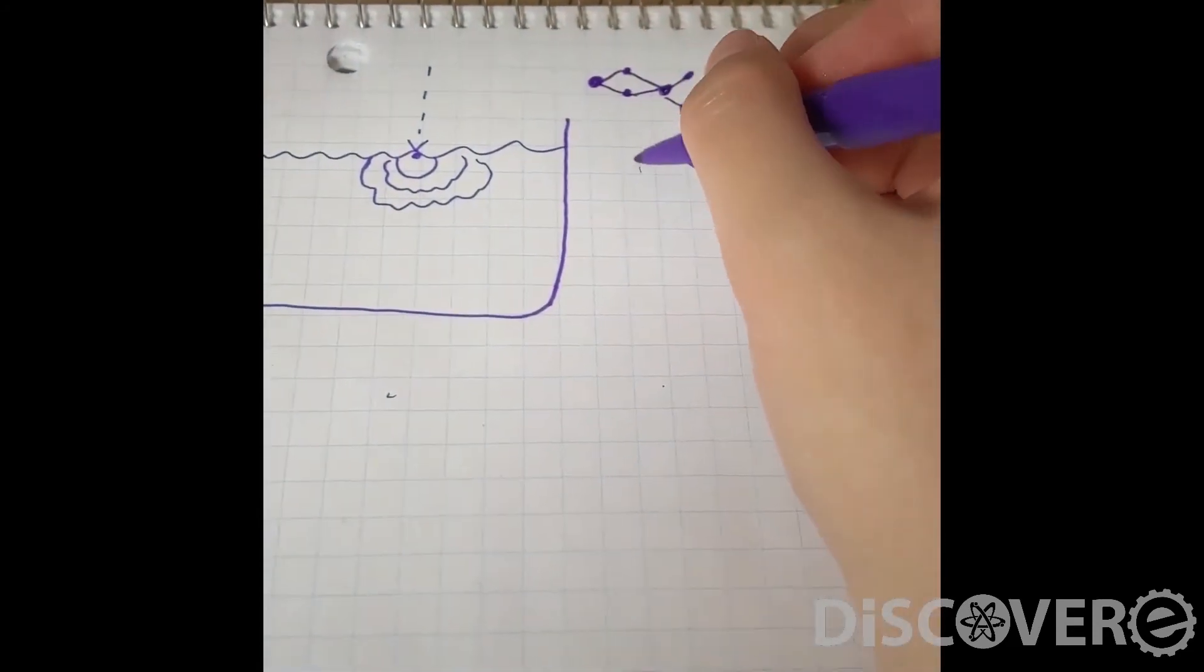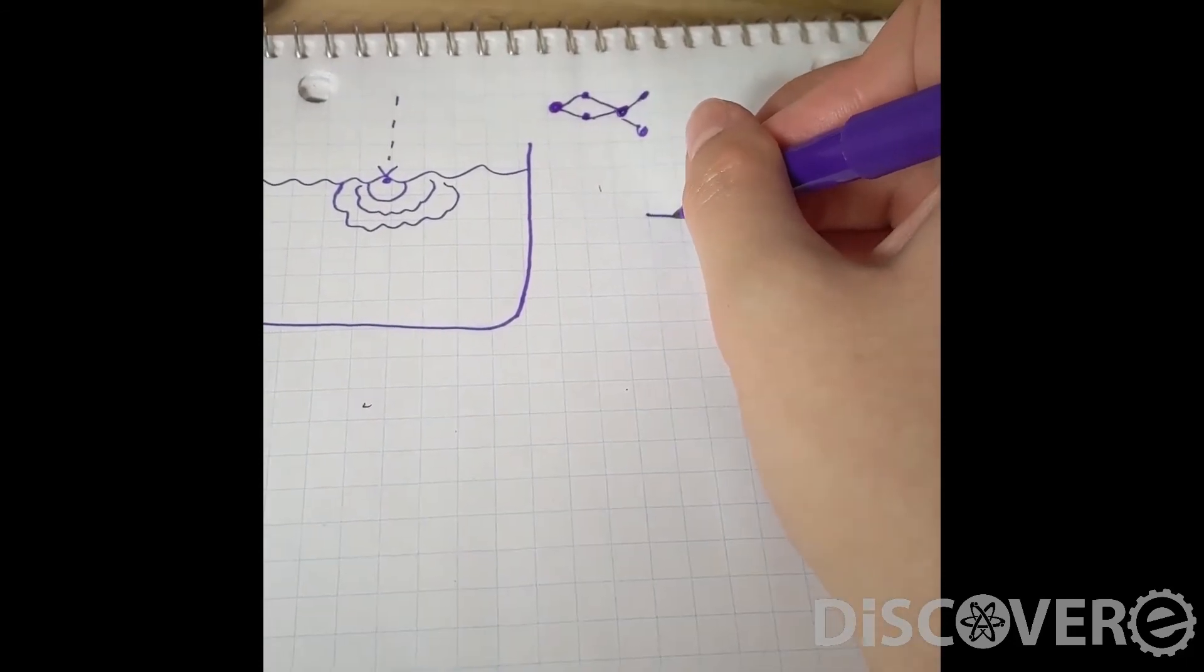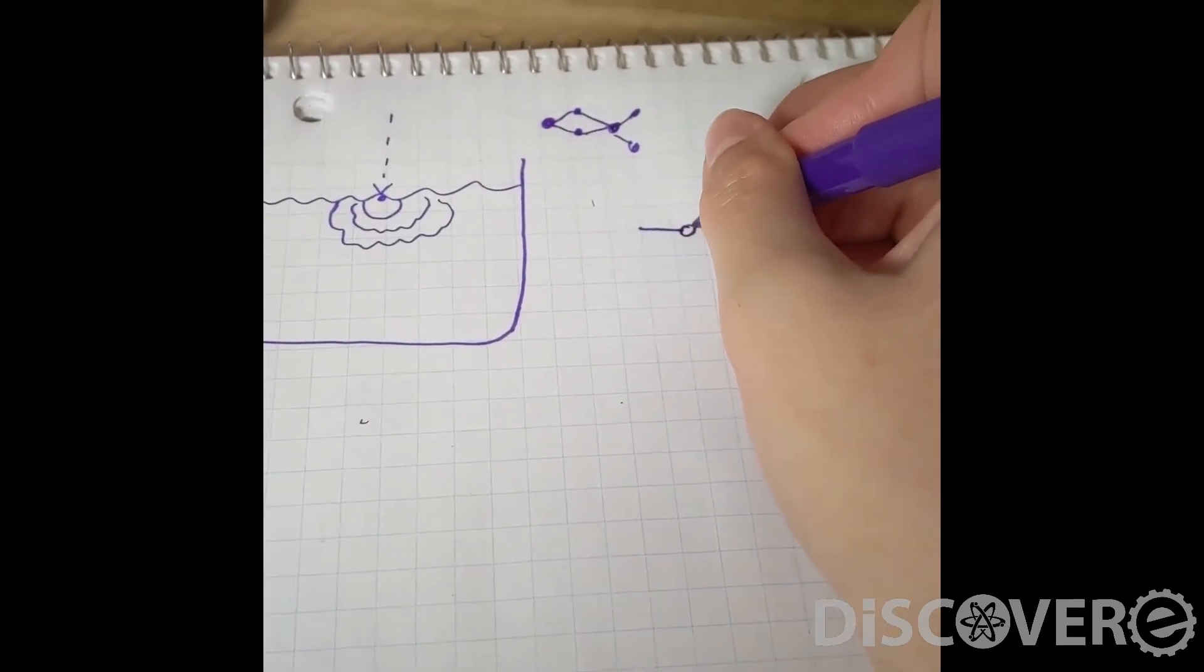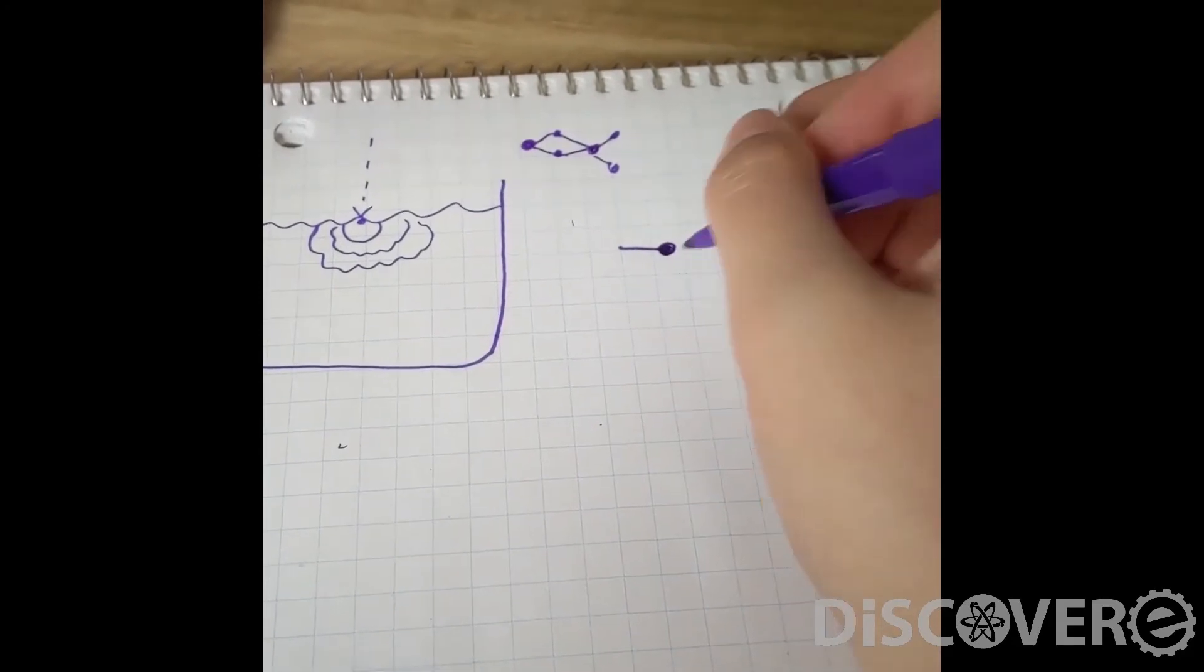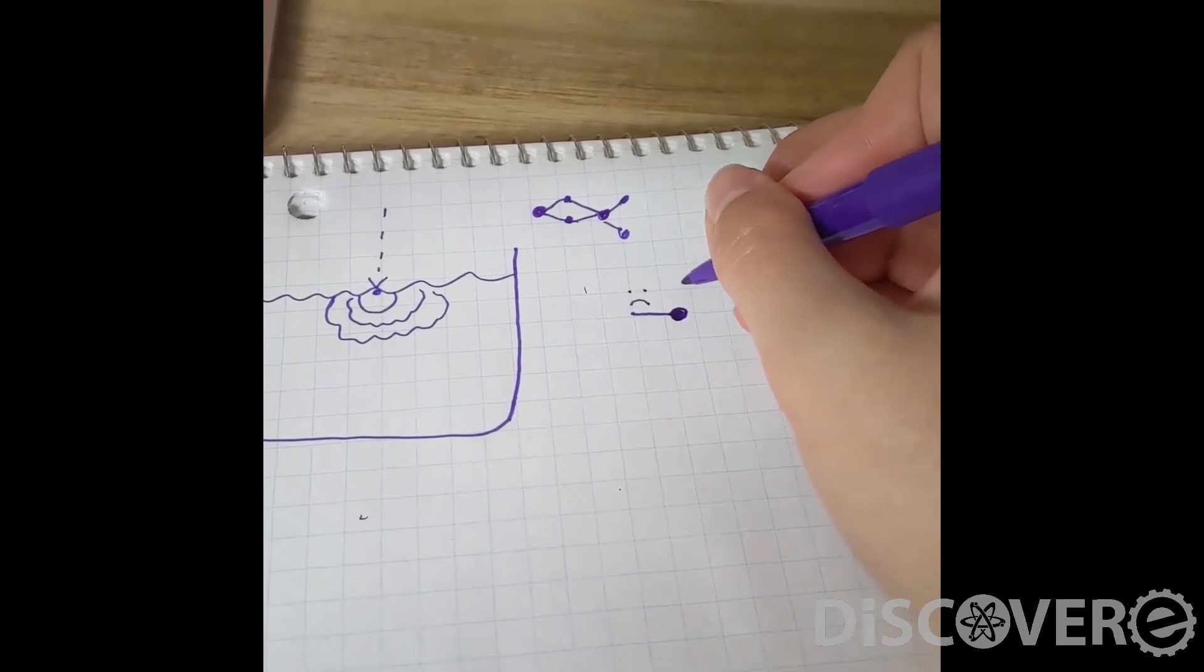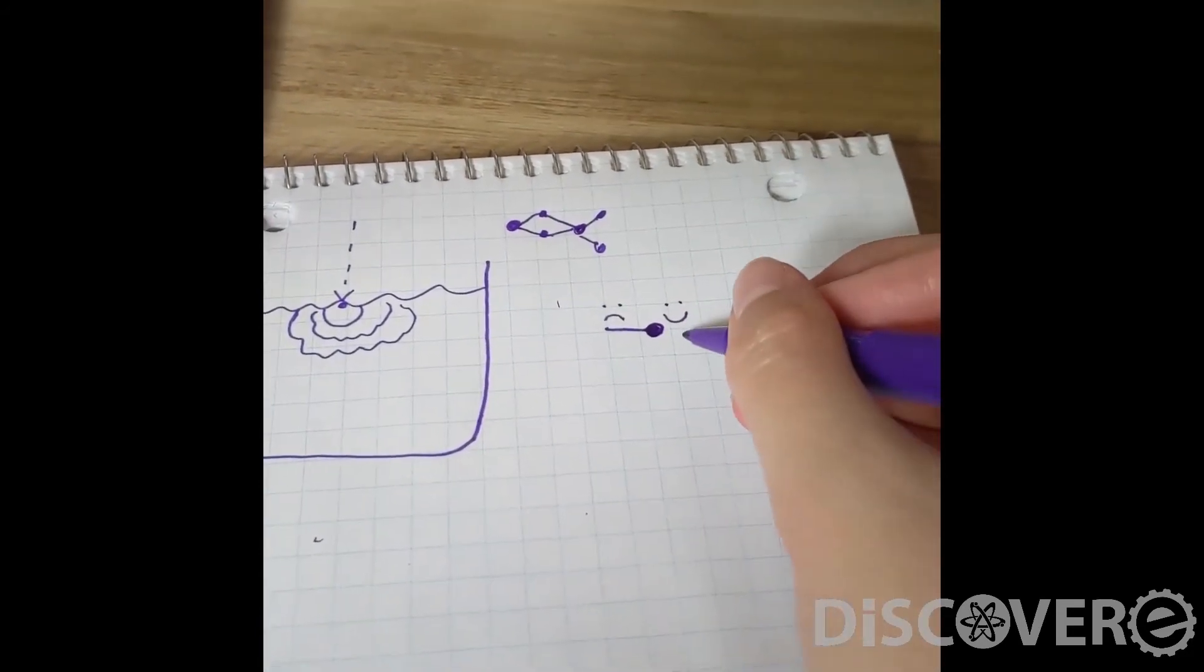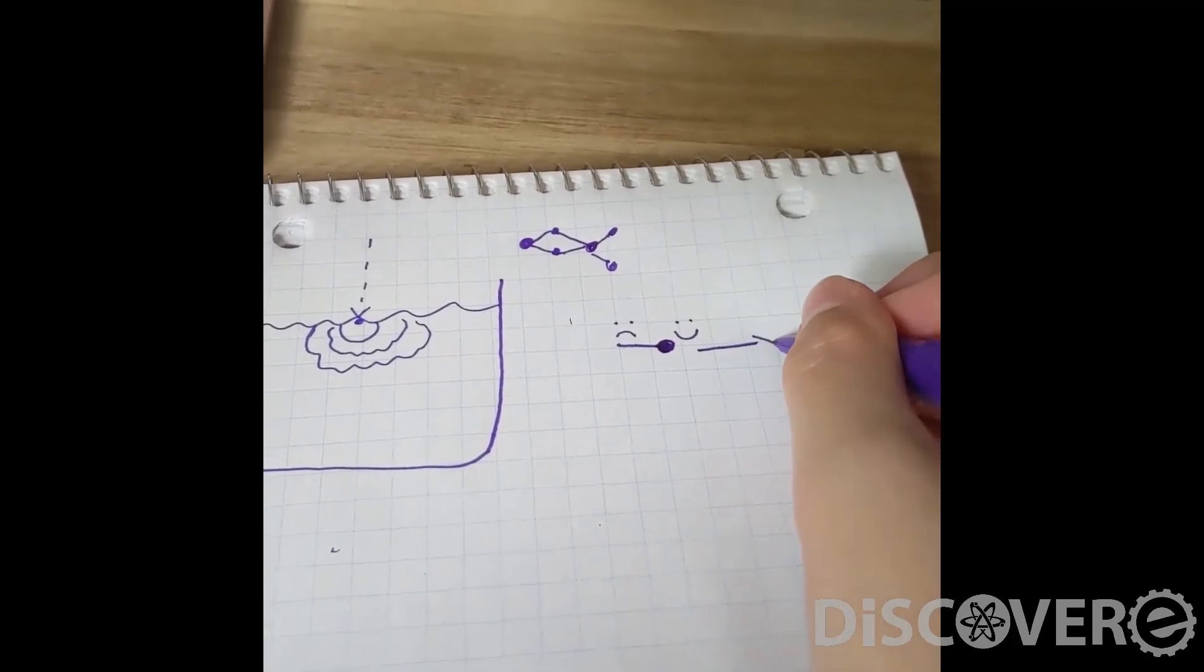When you have a surfactant, like soap, you get something that looks like this. It's got a little stick with like a ball on the end. The stick doesn't like water, but the top loves water. So you get kind of propelling along and it disrupts the surface tension.